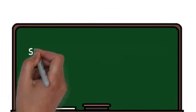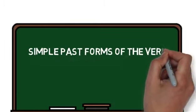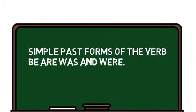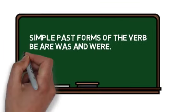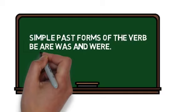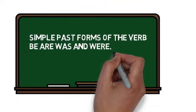The simple past forms of the verb be are was and were. We use was and were in the place of be when we are to make any sentence in simple past.